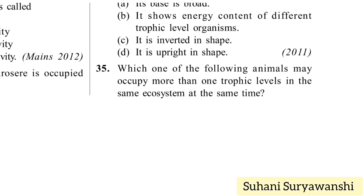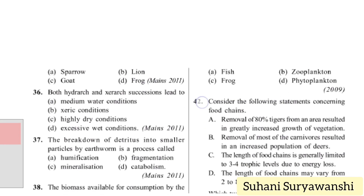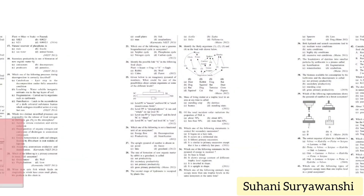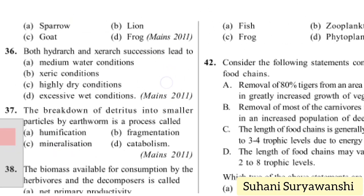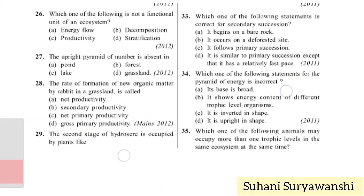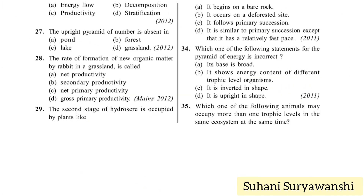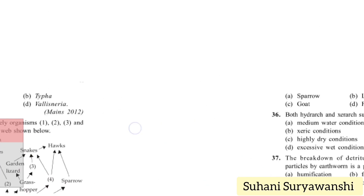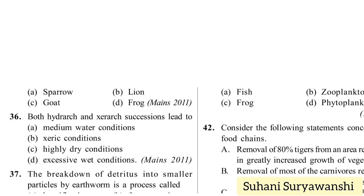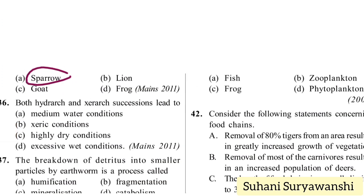Which one of the following animals may occupy more than one trophic level in the same ecosystem at the same time? Options: sparrow, lion, goat, frog. Sparrow can eat insects, seeds, and small organisms, so it can occupy more than one trophic level. Option A — sparrow — is the right answer.